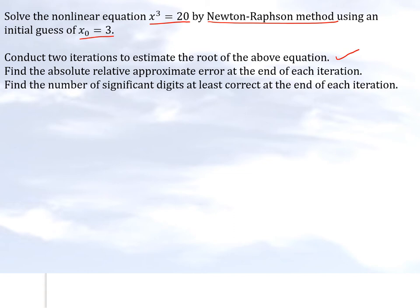We are asked to conduct two iterations to estimate the root of the equation, calculate the absolute relative approximate error at the end of each iteration, and find the number of significant digits which are at least correct at the end of each iteration. So let's get started.